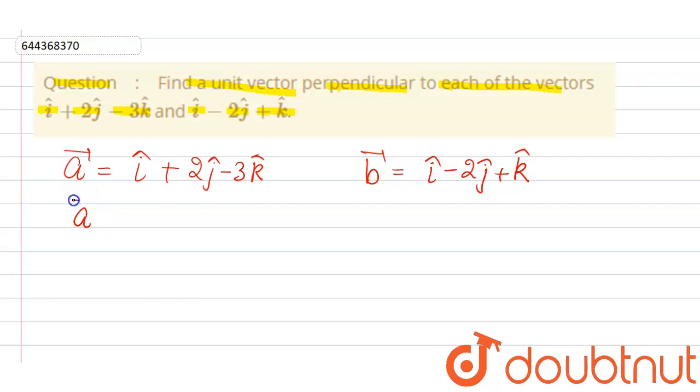So what we have to find, we have to find a unit vector perpendicular to both vectors. Now we know that a cross b is a vector which is perpendicular to a as well as perpendicular to b.